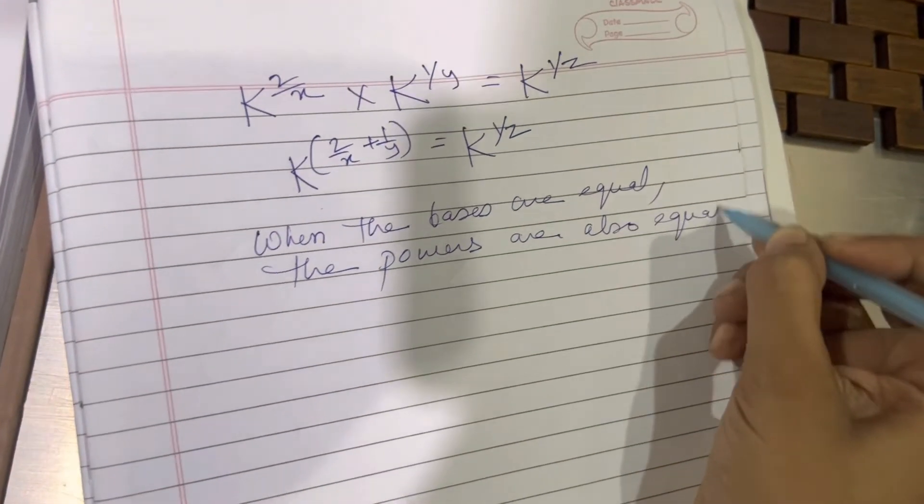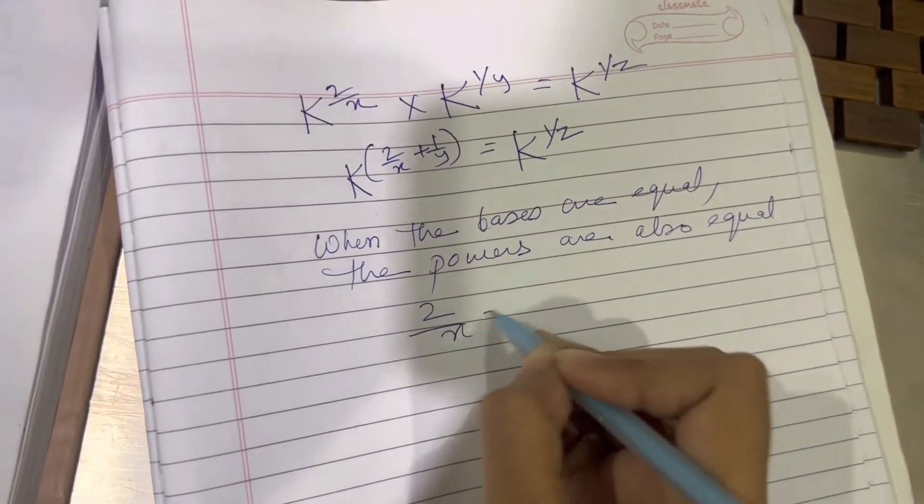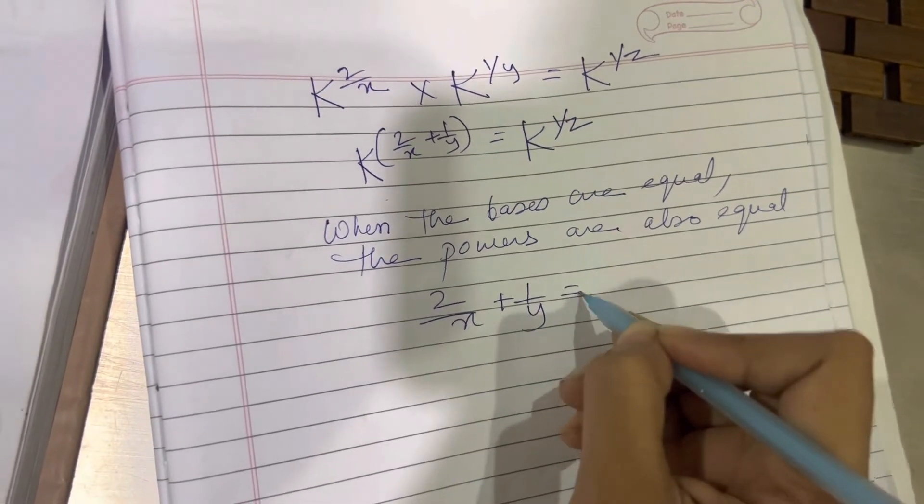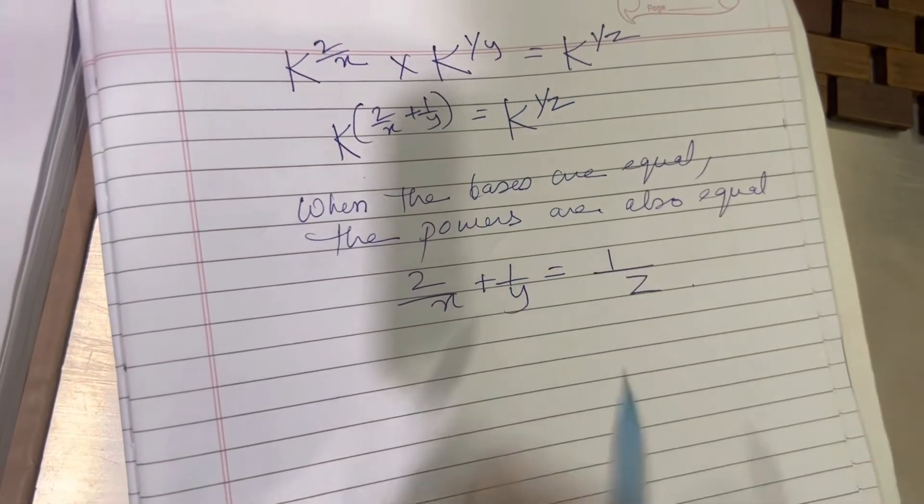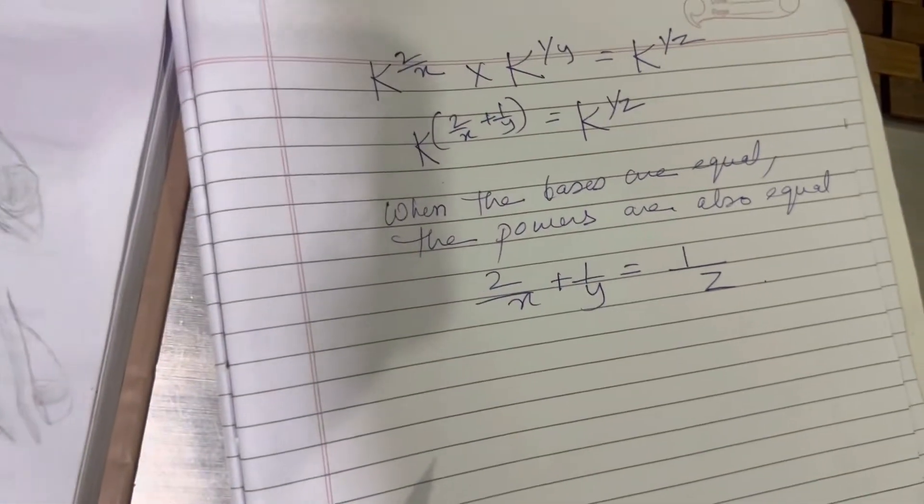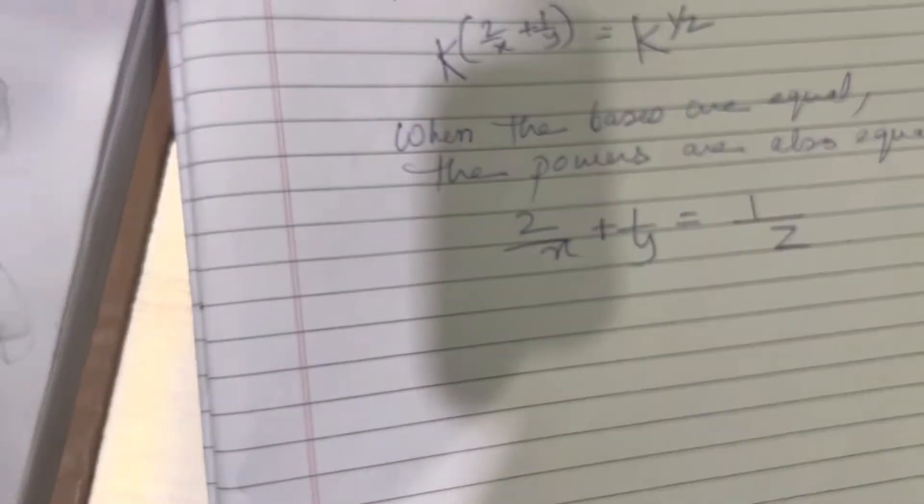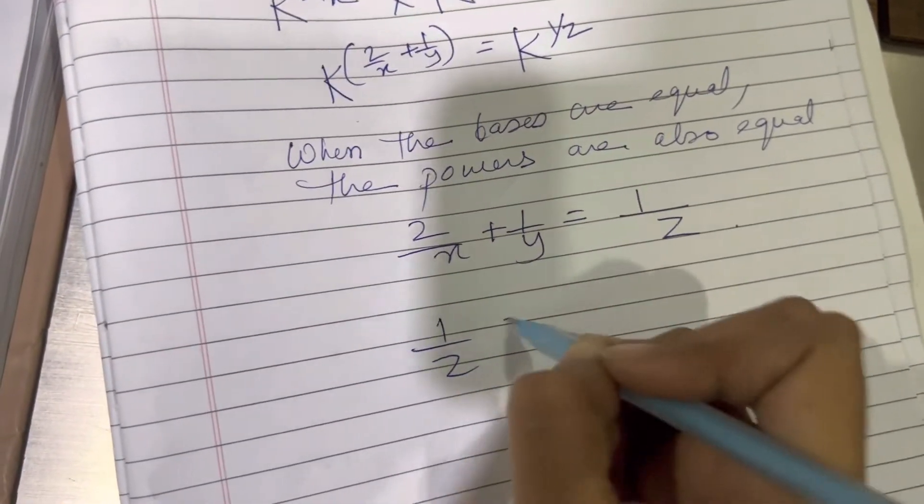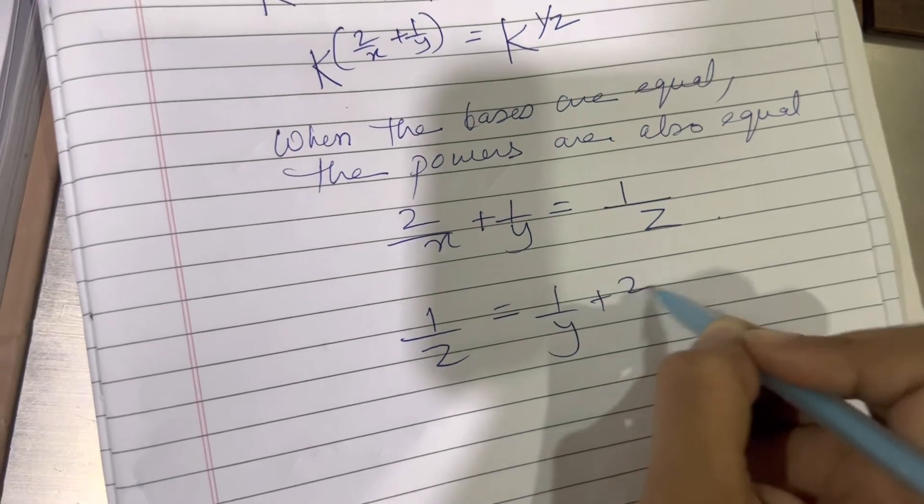So 2 by x plus 1 by y will be equal to 1 by z. I think this is what we had to prove. Therefore, 1 by z equals to 1 by y plus 2 by x.